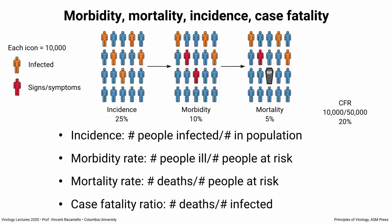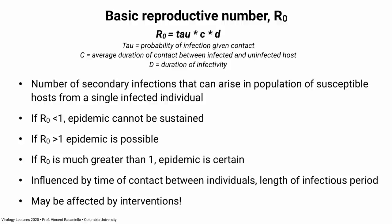Let's define some widely misunderstood terms: morbidity, mortality, incidence, and case fatality ratio. Incidence is the number of people infected over the total population. Morbidity rate is the number sick divided by those at risk for infection. Mortality rate is the number of deaths divided by those at risk. The case fatality ratio — CFR — is the number of deaths over the number infected, expressed as a percent. Note that CFR is a ratio, not a rate.